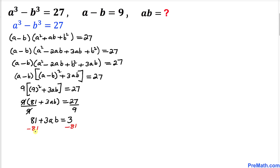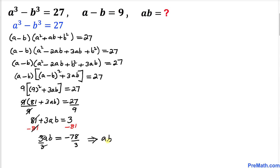Now let's subtract 81 from both sides. The 81s cancel, leaving us with 3 times ab equals negative 78. Dividing both sides by 3, the 3s cancel, so ab equals negative 26.